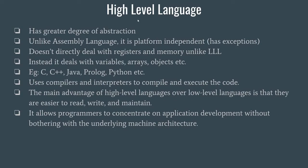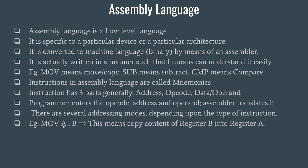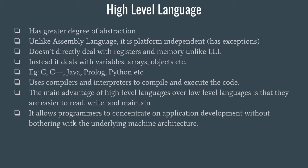Now we move to high-level language. High-level language has a high degree of abstraction compared to assembly language. In assembly language you can directly interact with the memory of your computer system, but in high-level language you cannot. For example, in assembly language the instruction MOV A, B copies the content of register A into register B — you are directly dealing with registers. But in high-level language you deal with variables, arrays, and objects, for which space will be allocated.